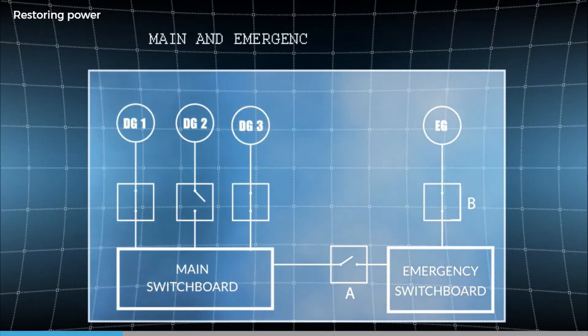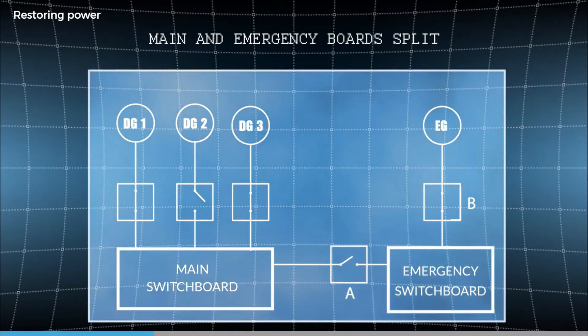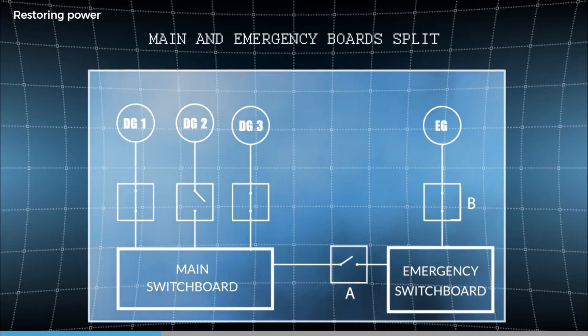So now, we will usually be in a situation where we have the emergency switchboard fed by the emergency generator and the main switchboard fed by the main generator. However, the two are not connected. Keep this in mind.